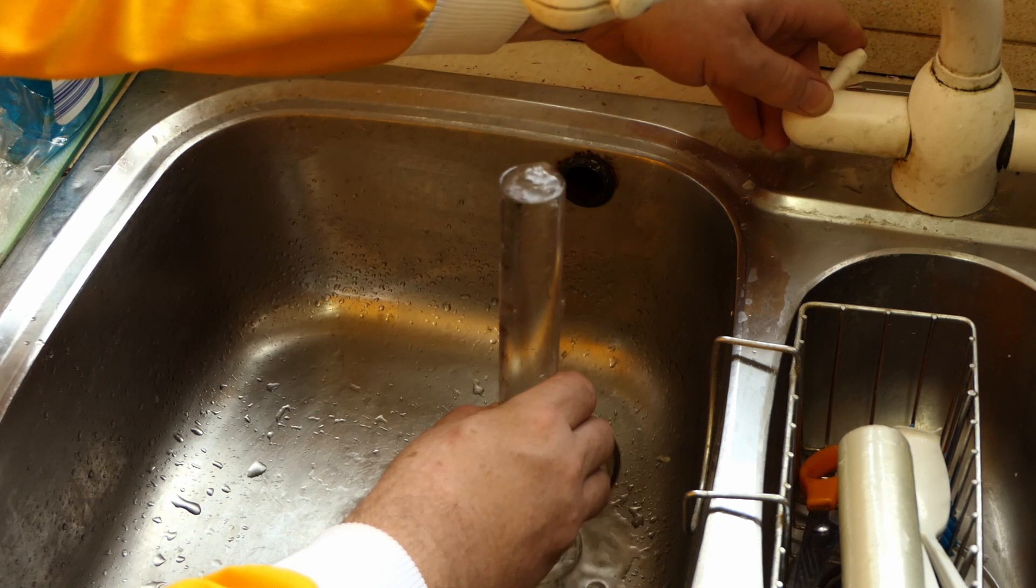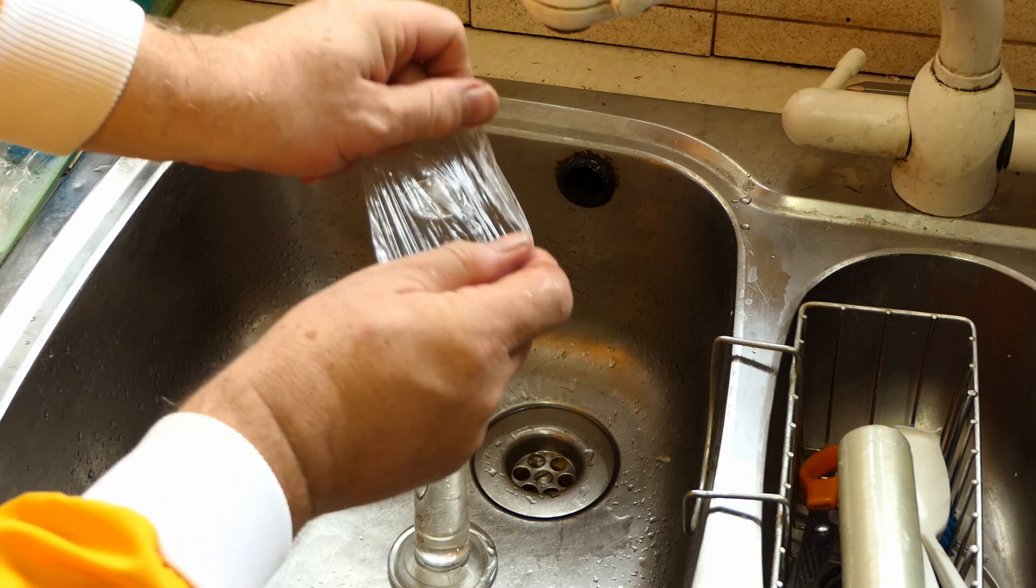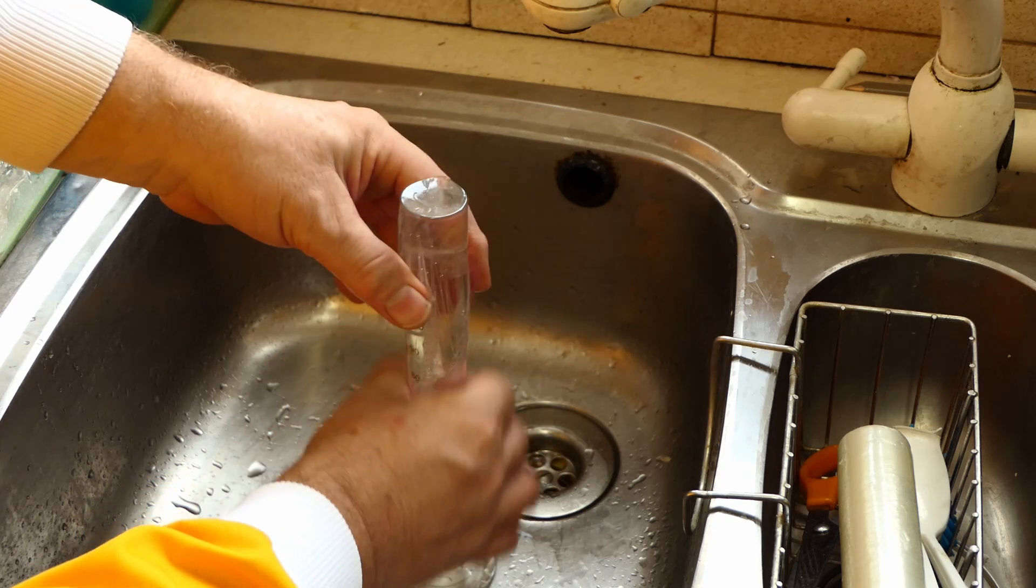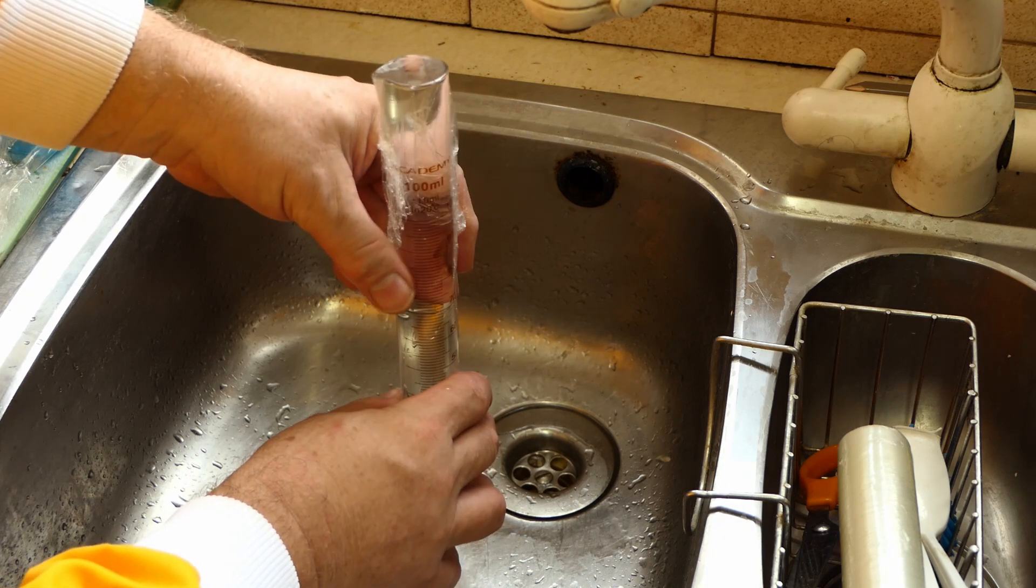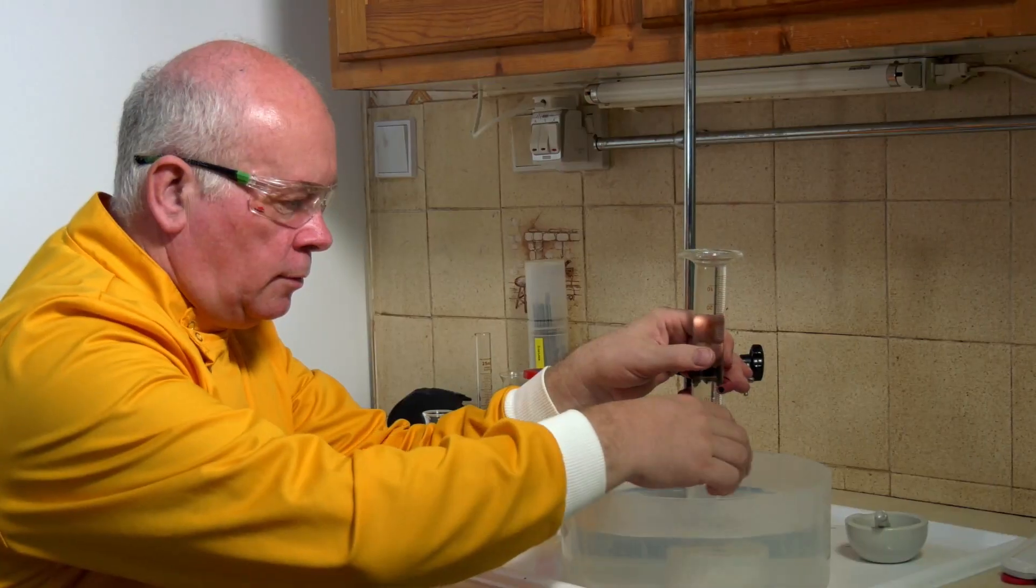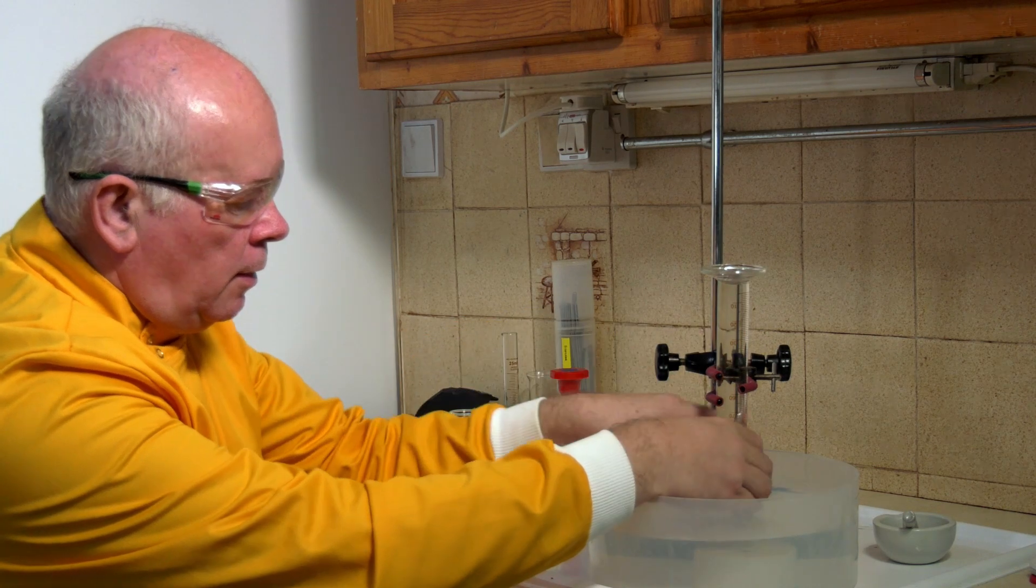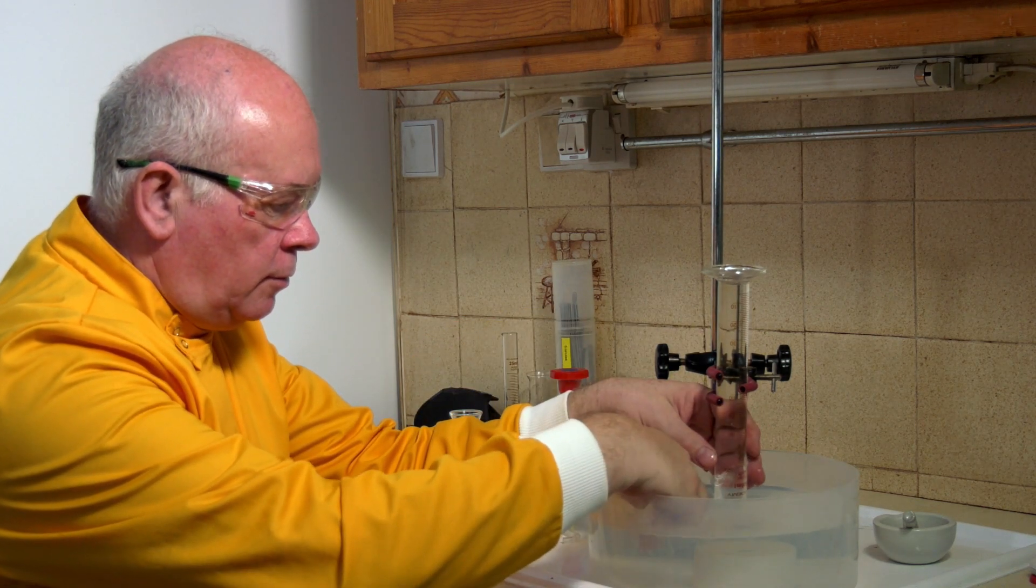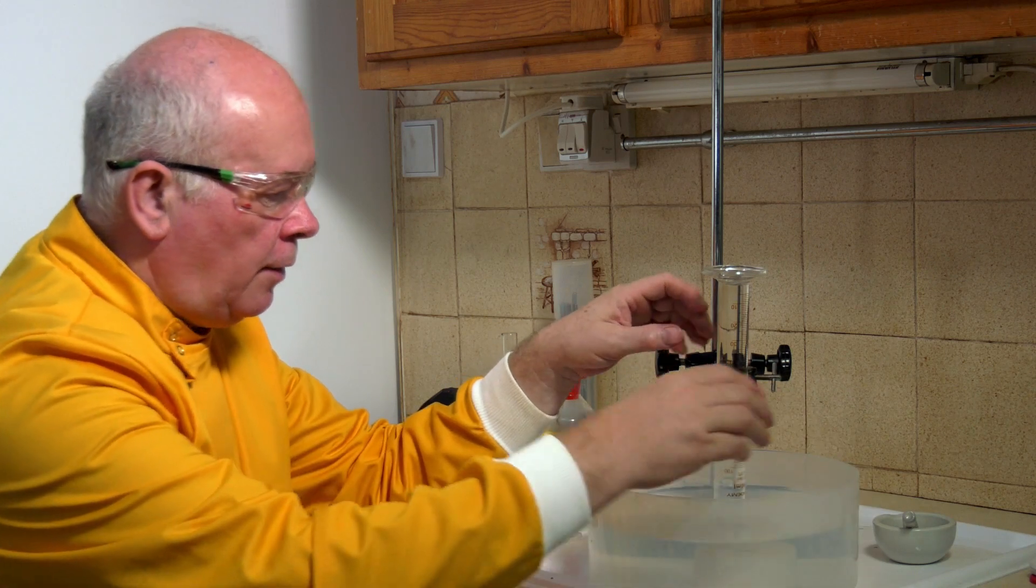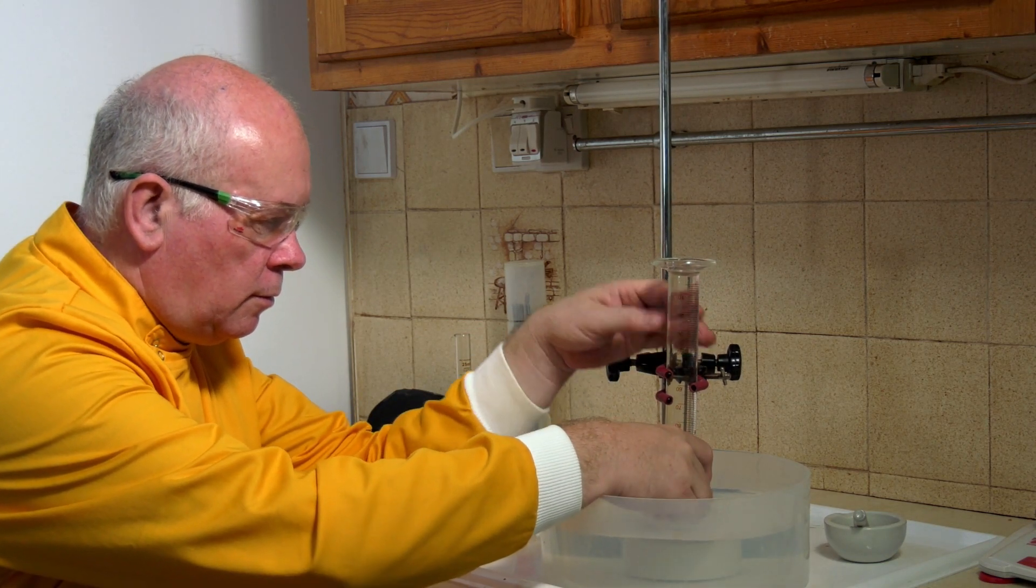I'm going to fill this right to the top, and then I'm going to place a piece of cling film carefully over the top, ensuring I get no air bubbles in there. Now we're ready to put that in. Let's now turn it upside down, put it into the water, and I'm going to clamp it very loosely. I'm then going to remove the cling film so no air bubbles get in, and then I'm going to maneuver the beehive shelf so that it is right over the measuring cylinder.